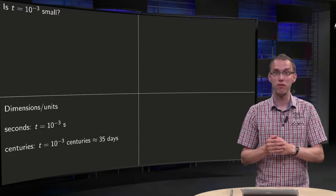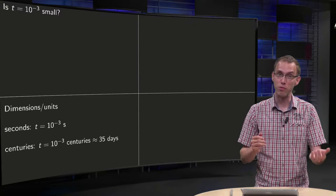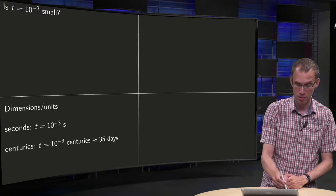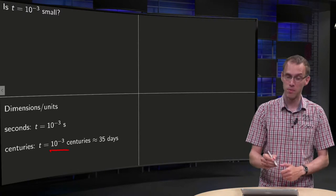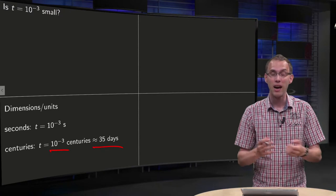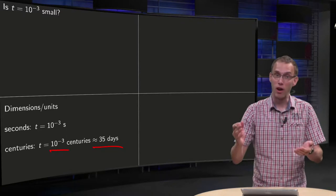If we are looking for example in a unit of seconds, we have t equals 10 minus 3 seconds, or if we would have as our unit centuries, our time t equals 10 minus 3 in centuries becomes approximately 35 days. And again the question, is that a small time or a large time?